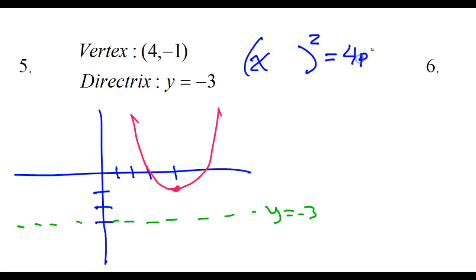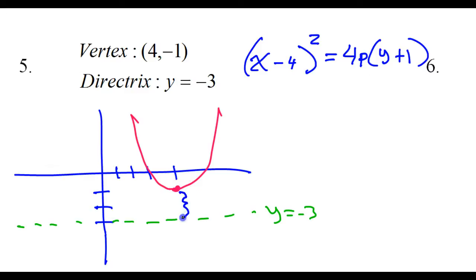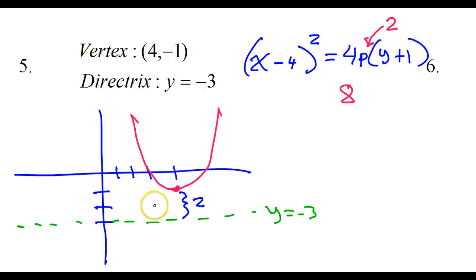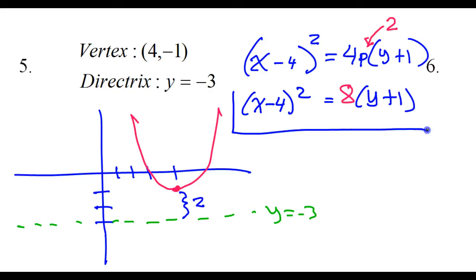So I'll have 4p and then the y situation. The x is 4, so it's going to be minus 4. The y is negative 1, so it's going to be plus 1. And then I just need to know what p is. The p value is this gap, which is 2. As I substitute that p value of 2 in, this is going to become 8 — and I definitely want it to be a positive 8 because it is facing upward. And that is it for number 5.